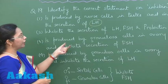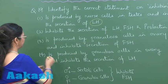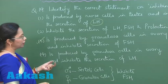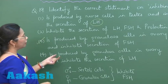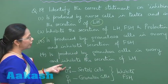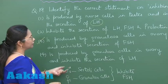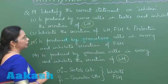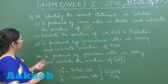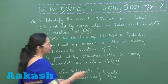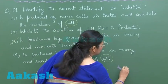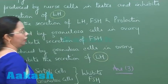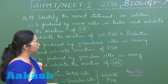The third choice states that inhibin is produced by granulosa cells in the ovary and inhibits the secretion of FSH — this is absolutely correct. The fourth choice also says secreted by granulosa cells but states it inhibits LH secretion, making it incorrect. So the correct answer is option number three.